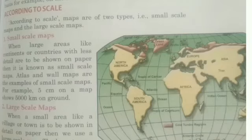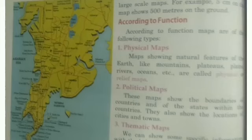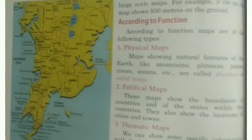According to function, maps are of the following types. Number one: physical maps — maps showing natural features of the Earth like mountains, plateaus, plains, rivers, oceans, etc. are called physical or relief maps. Number two: political maps — these maps show the boundaries of countries and of the states within the countries. They also show the locations of cities and towns.